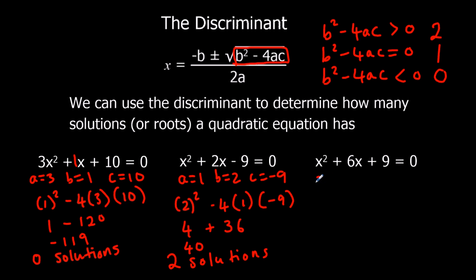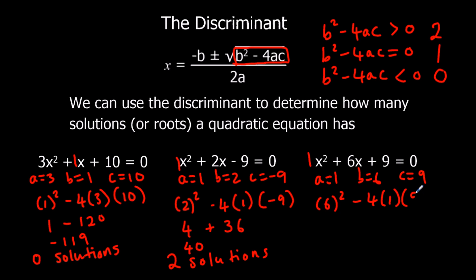For the third equation, a is 1, b is 6, and c is 9. So b squared minus 4ac: 6 squared is 36, minus 4 times 1 times 9 is 36. 36 minus 36 equals zero. If it equals zero, that means it's got one solution or one real root.